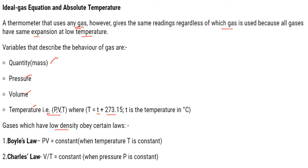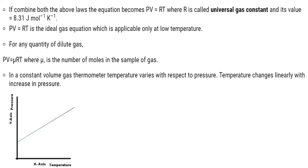Gases with low density obey two laws: Boyle's law, which states that at constant temperature, pressure times volume remains constant; and Charles' law, which states that at constant pressure, volume divided by temperature remains constant. Combining these gives the ideal gas equation PV = RT, where R is the universal gas constant with value 8.31 J/mol/K. For any quantity of dilute gas: PV = μRT, where μ is the number of moles.